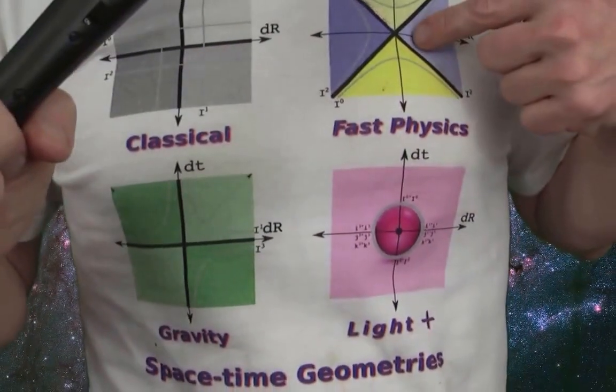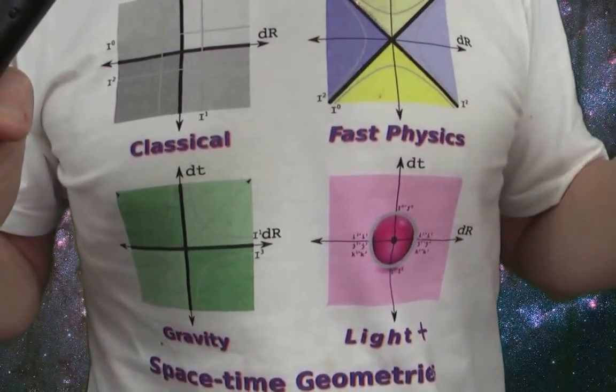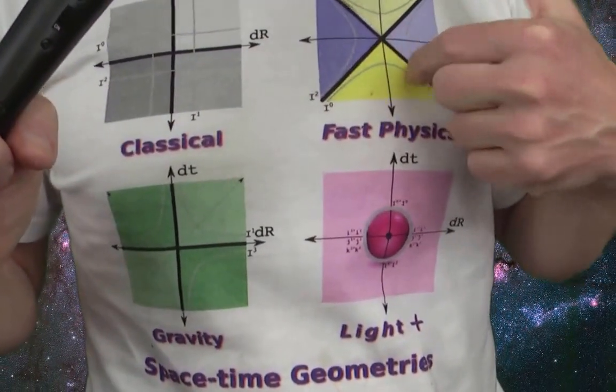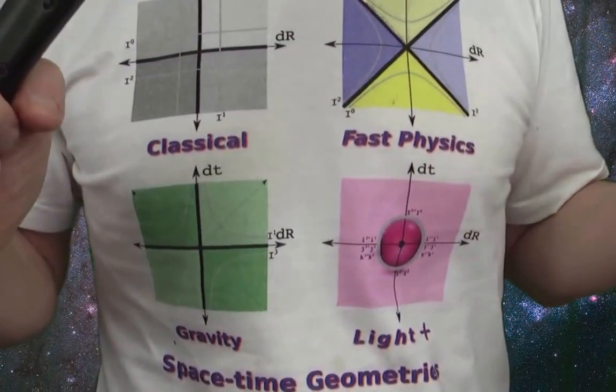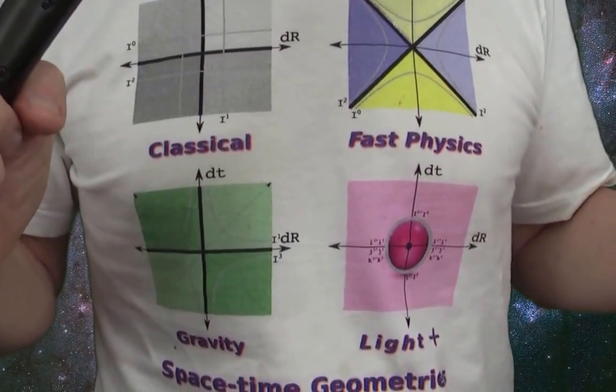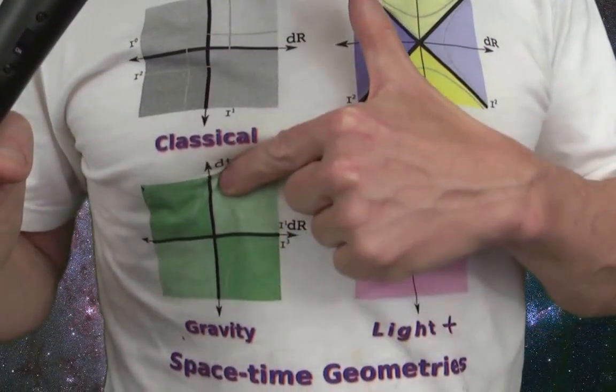Now, in special relativity, if you've got two inertial observers, they can be at different spots on the gray line. And the different spots would just mean that they're going at different speeds. Nothing more or less than that.